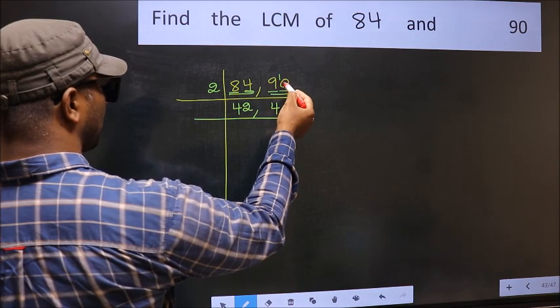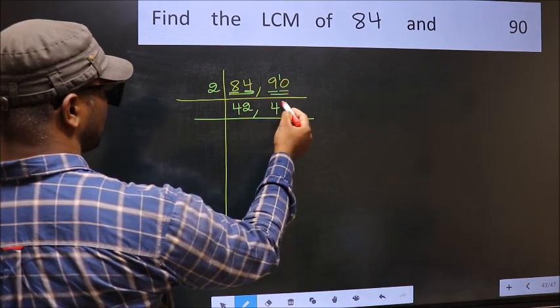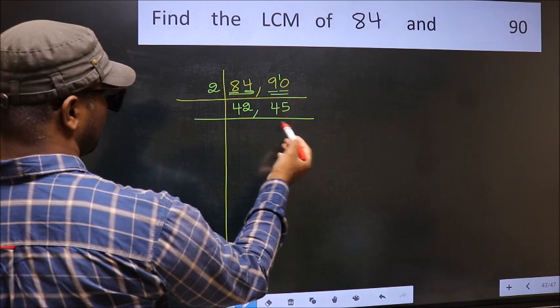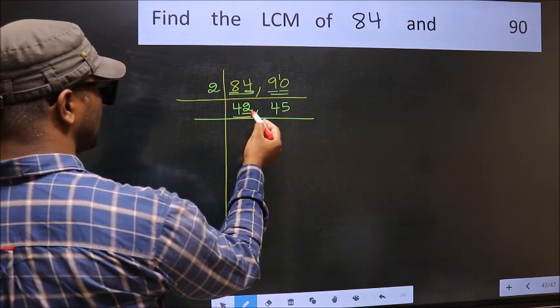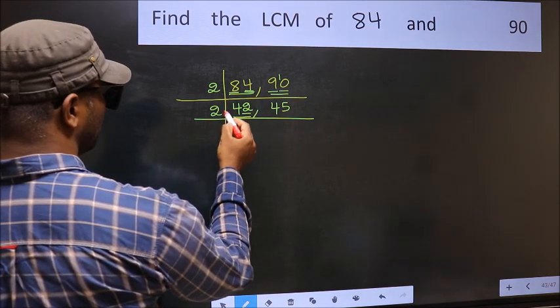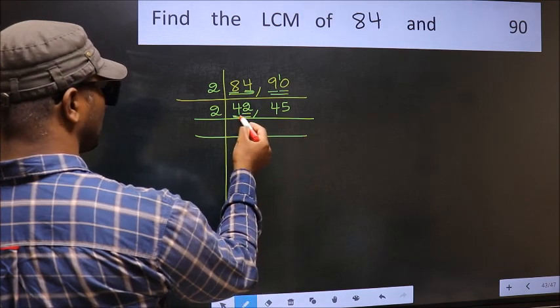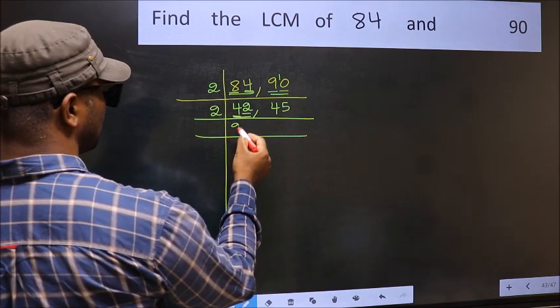9 minus 8 is 1, 1 carried forward makes 10. When do we get 10 in 2 table? 2 5s 10. Now 42. Last digit 2 is even so take 2. First number 4. When do we get 4 in 2 table? 2 2s 4.